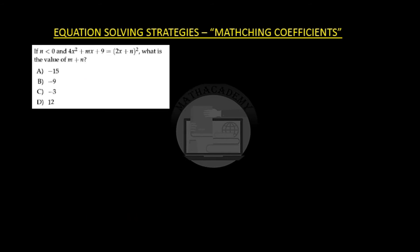If n is less than 0 and 4x square plus mx plus 9 is equal to 2x plus n whole squared, what is the value of m plus n? What is our left hand side? 4x square plus mx plus 9 and the right hand side we can expand it by the identity a plus b whole square.